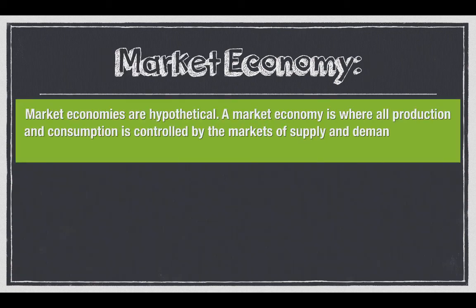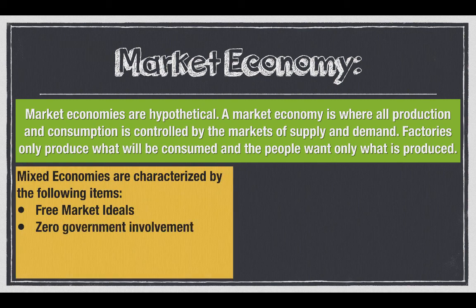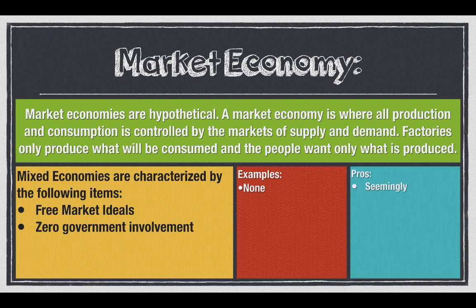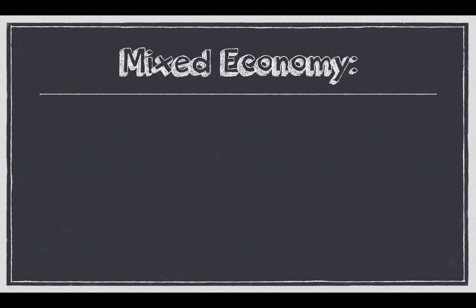Next is the market economy — this is hypothetical, it doesn't exist. Basically, the markets control everything; government always wants their share, so that doesn't happen in practice. It's characterized by free market ideas and zero government involvement. Examples include none — there are zero examples. Pros: seemingly perfect, no regulation, no taxes. Cons: zero government regulation and it's non-existent.